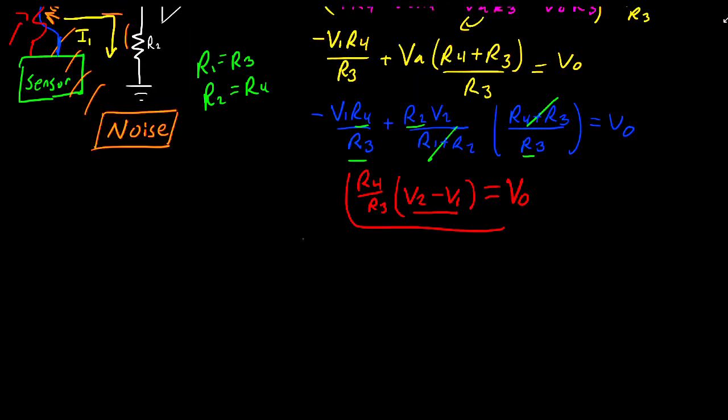So now the result of this is that V1 is now equal to V1 plus VN for V noise. And V2 is equal to V2 plus VN. Because on average, they're both going to see about the same amounts of noise.